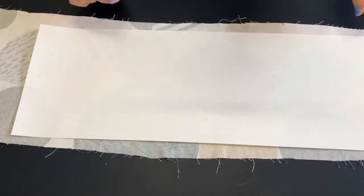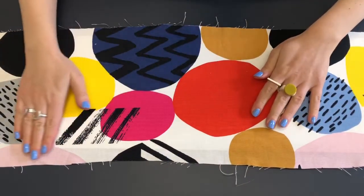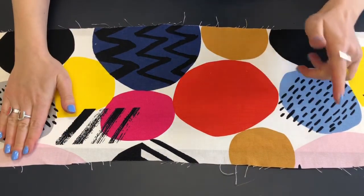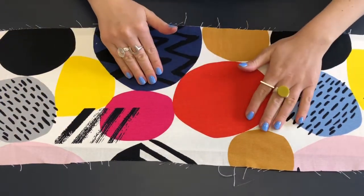Now stick it down lightly to start with and flip it over and just check that you don't have any wrinkles. You can take it on and off again but the more times you take it on and off the less sticky the back piece becomes. So you want to avoid that if you can.